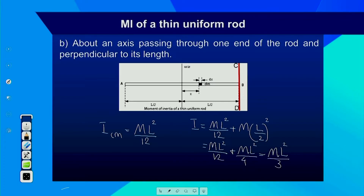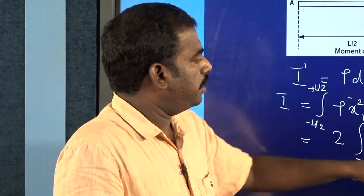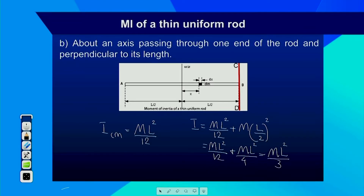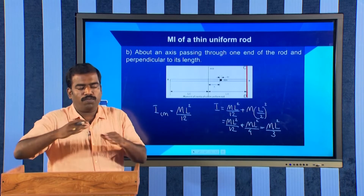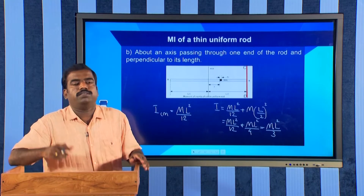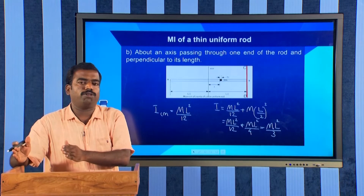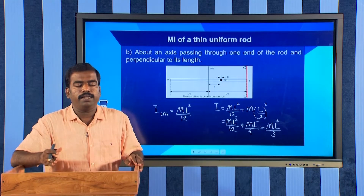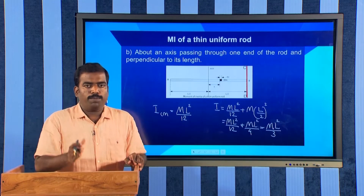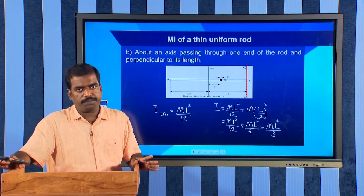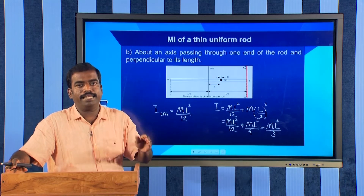This is why we explained that the moment of inertia of the same body may vary. In the previous case we got ML²/12, but here the expression is ML²/3 based on the new axis. So you have to specify the axis: moment of inertia of the rod about an axis through its center is ML²/12, and about one of its ends is ML²/3.